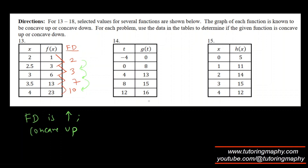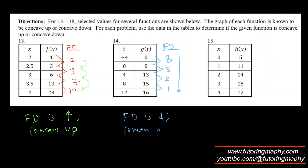For the next table, the first differences are 8, 5, 2, 1 — clearly decreasing. Since the first difference is decreasing, this function is concave down.